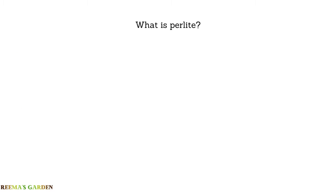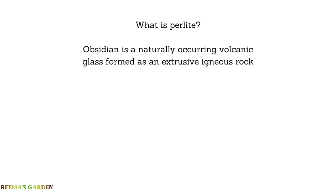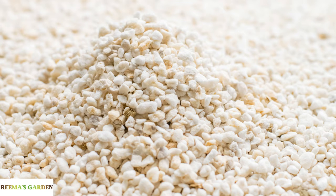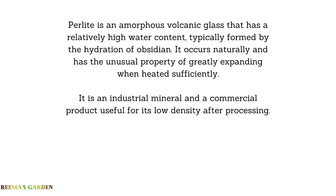So what is perlite? Obsidian is a naturally occurring volcanic glass, and perlite is formed by processing and heating obsidian. When processed and heated, obsidian expands a lot — and because of the water inside the rock, it expands greatly and becomes very light in weight. So it is an industrial mineral and a commercial product useful for its low density after processing.